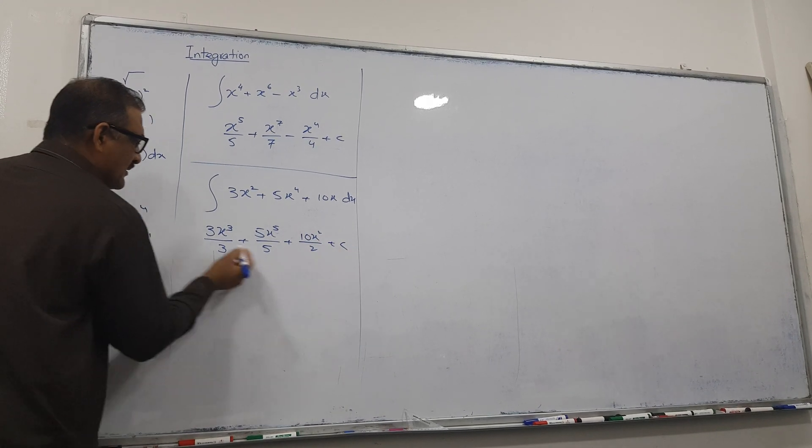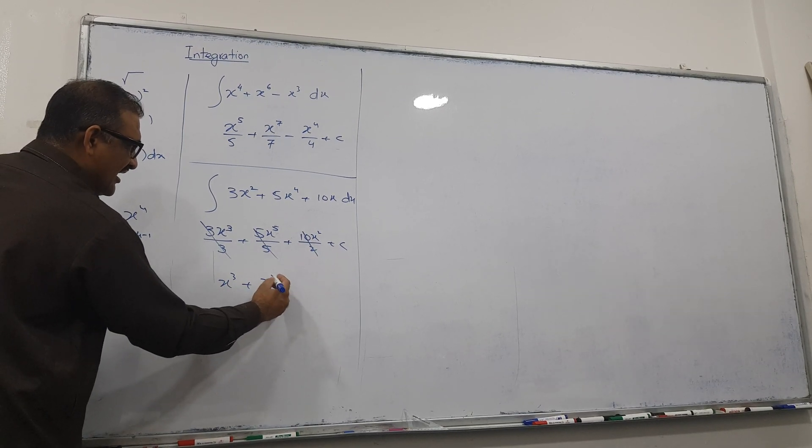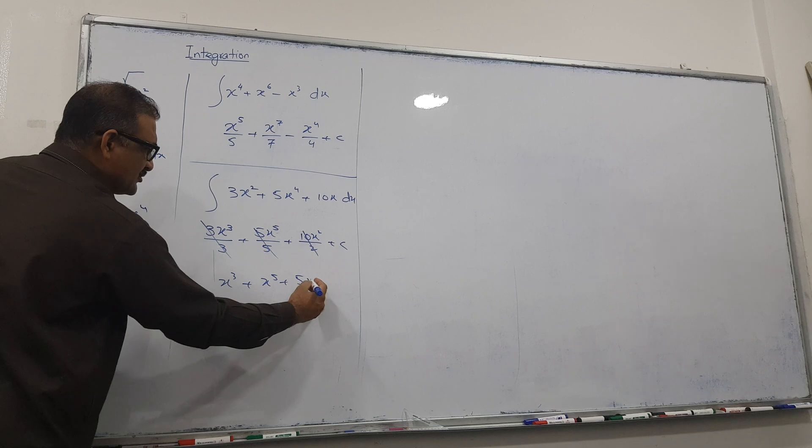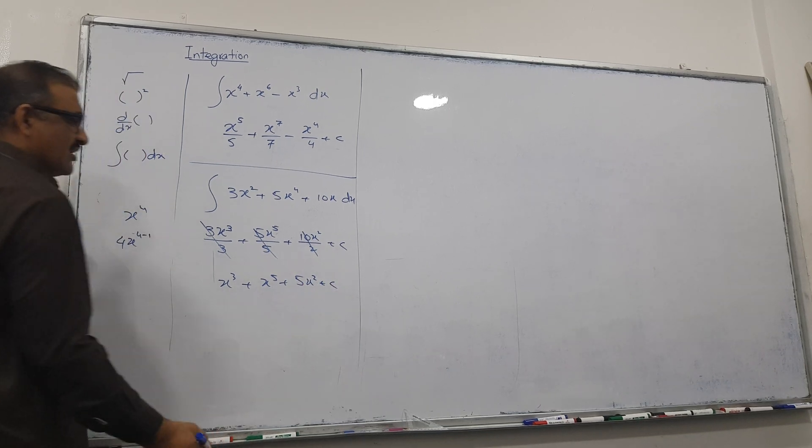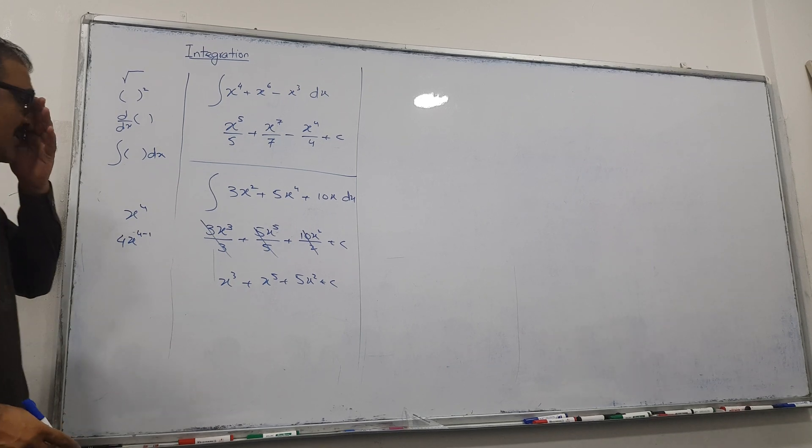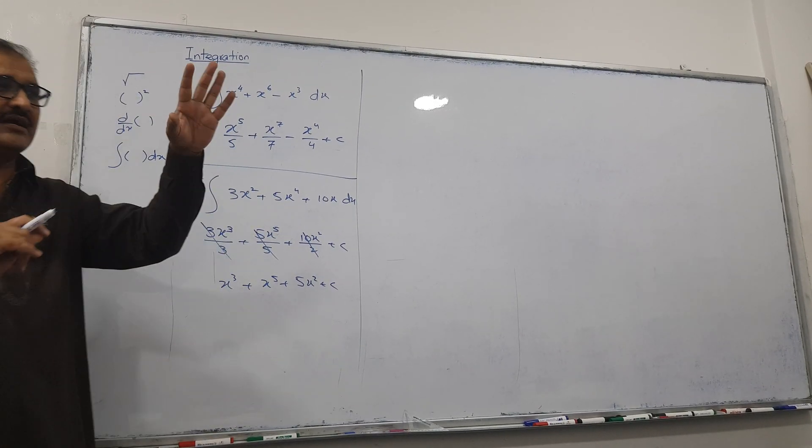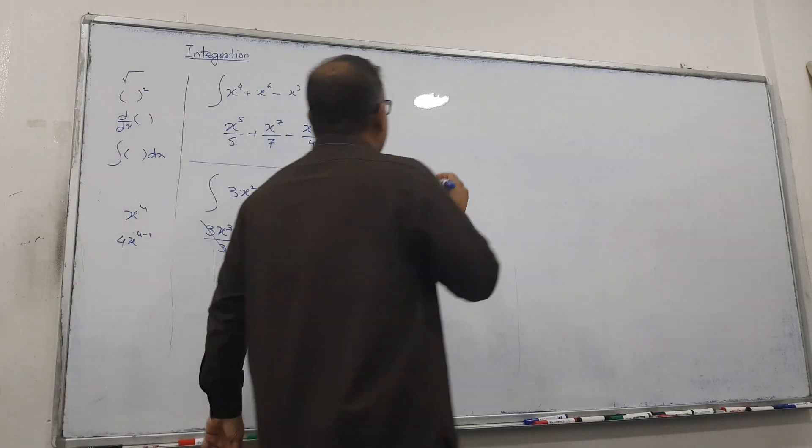Increase the power by 1, 2. Plus c compulsory. Cancel, cancel, and cancel. x cube plus x^5 plus 5x to power 2. I hope so clear. Any doubt up till now? Clear. Okay clear. Now I'll go for another basic example, very good example to understand.